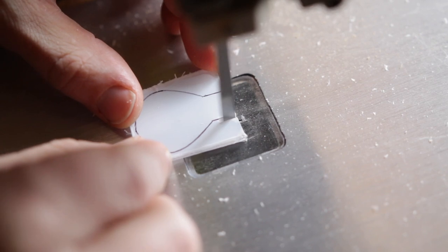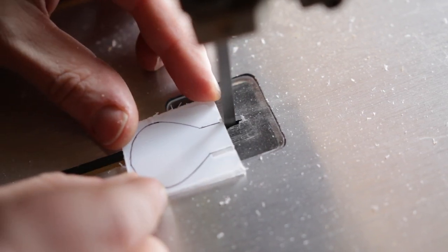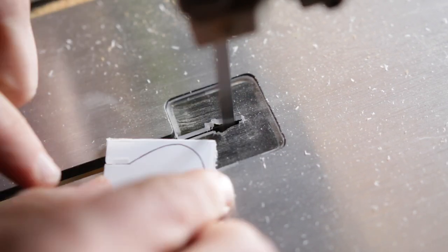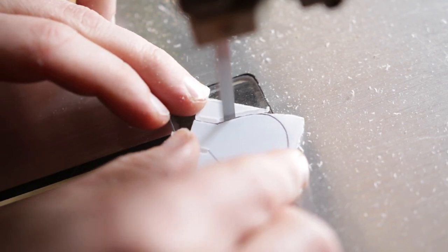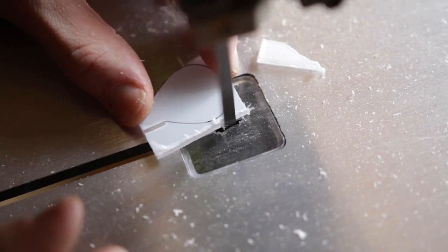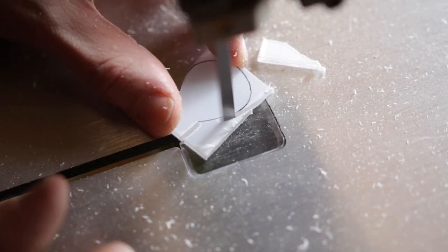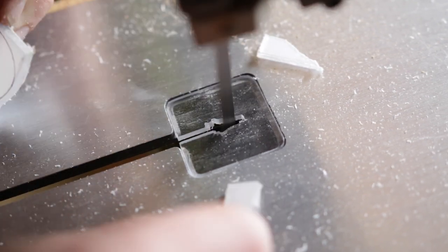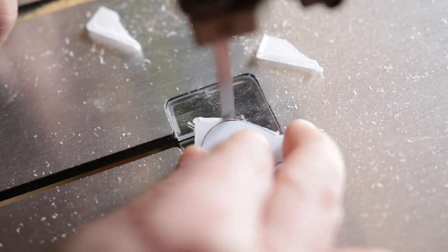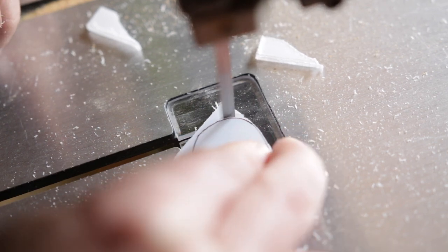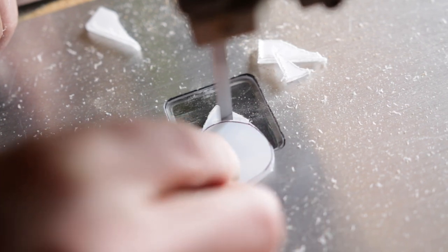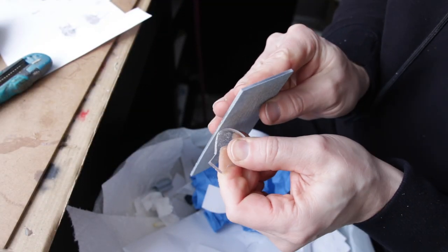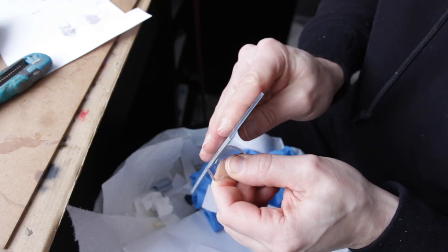While I'm waiting for the 5-minute epoxy to cure, I'm going to go ahead and make the lip for the lure. I decided to go with this kind of a rounder shape this time around. It's not completely round, it's kind of like a teardrop or water drop. I've had a lot of success with this sort of design before, so might as well go with something you know.